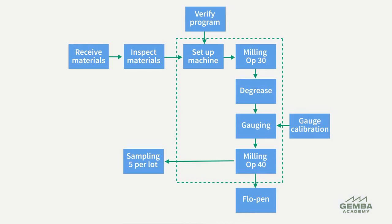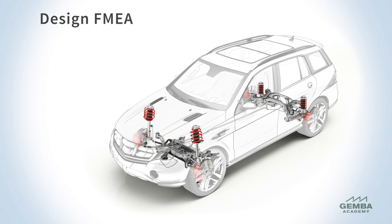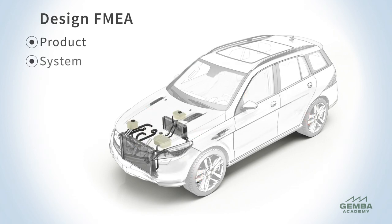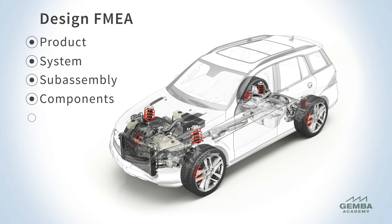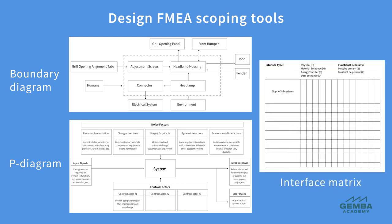A second difference is in how we set the scope for an FMEA activity. Scoping a process FMEA project is generally simpler than for products. It can be done with a block diagram supplemented by an interface matrix when needed. For design FMEAs, it's necessary to consider complex interactions between components and subsystems and how these affect risk. This often requires looking across multiple levels such as product, system, subassembly, components, and piece parts. Scoping for DFMEA requires additional visualization tools such as boundary diagrams, the P-diagram, or interface matrix when setting the scope for a design FMEA.